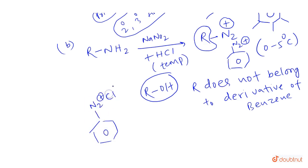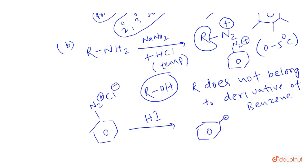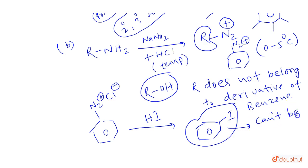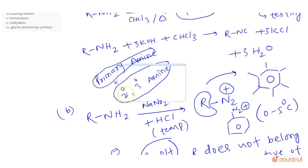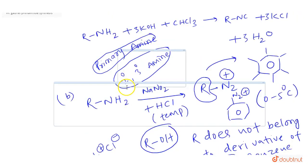Various things are made using benzene diazonium salt. For example, PhN2+Cl− when reacted with HI produces I — and this compound cannot be formed as easily like PhCl or PhBr. So there is a certain advantage of benzene diazonium salt. The next reaction is the Hoffmann bromamide reaction.